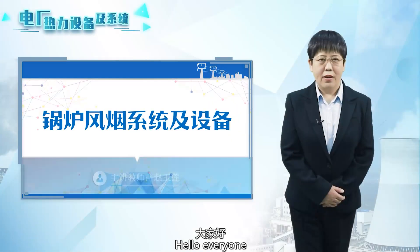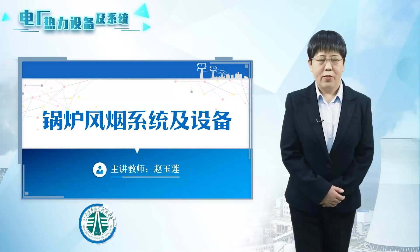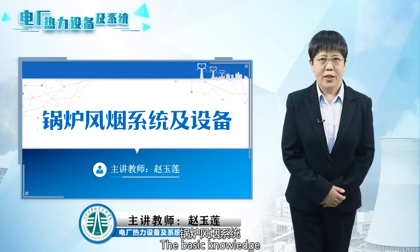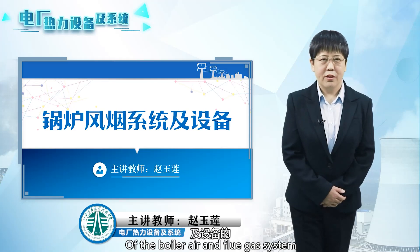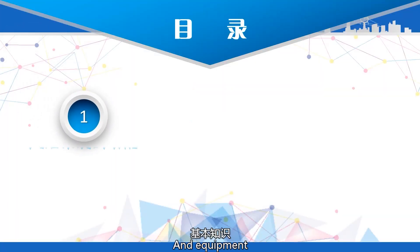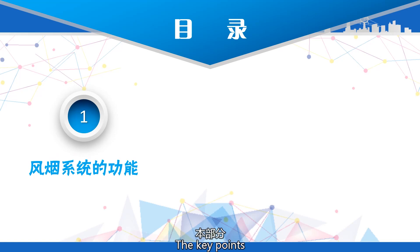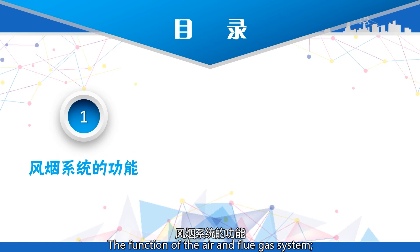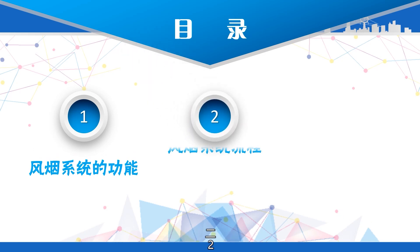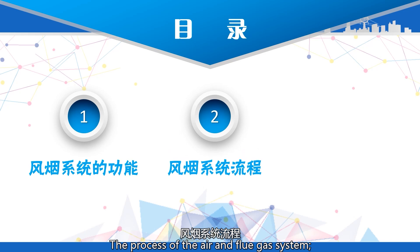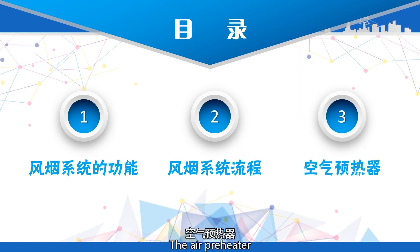Hello everyone! Now we will learn the basic knowledge of the boiler air and flue gas system and equipment. The key points of this section are as follows: first, the function of the air and flue gas system; second, the process of the air and flue gas system; third, the air preheater.